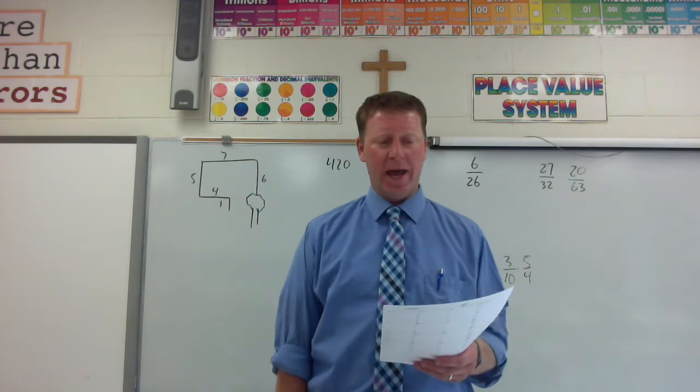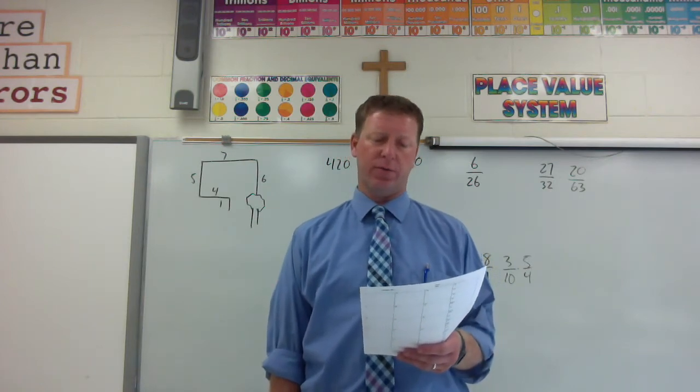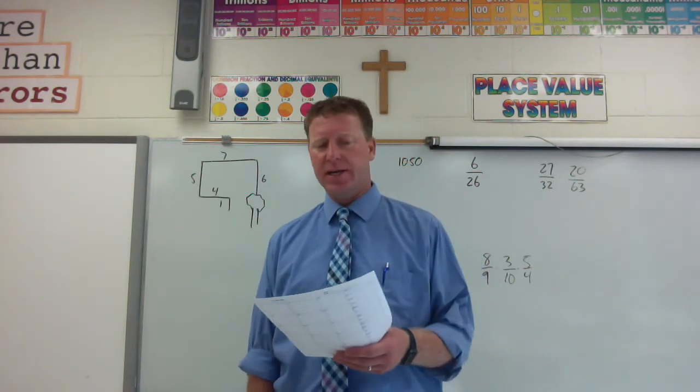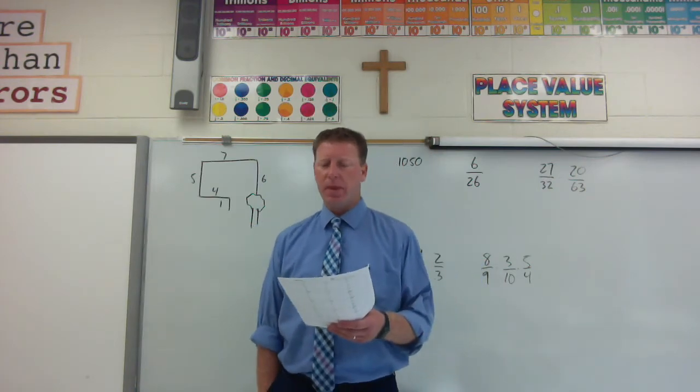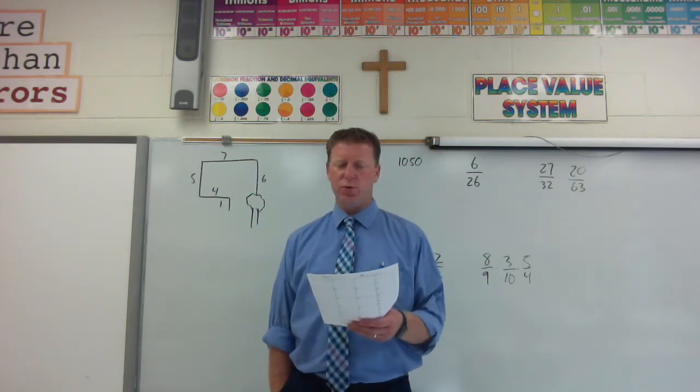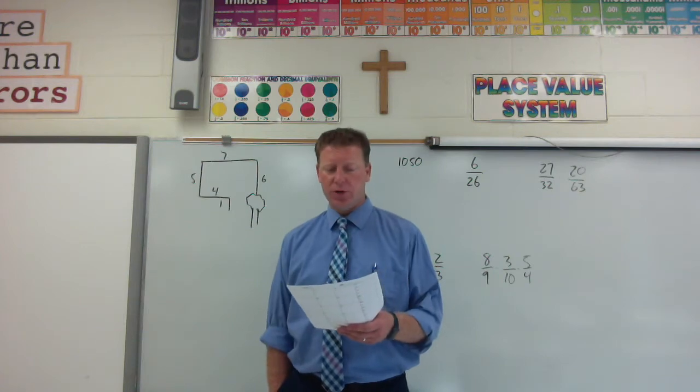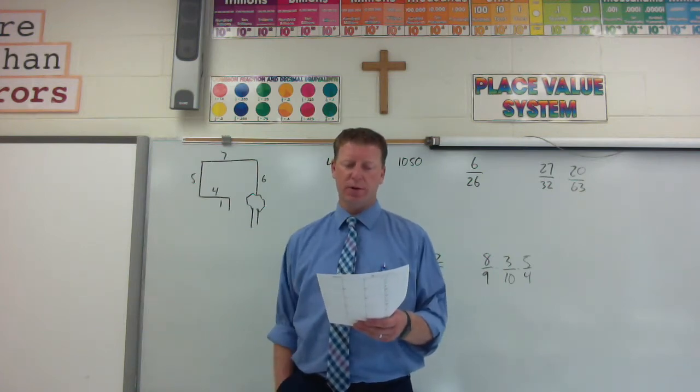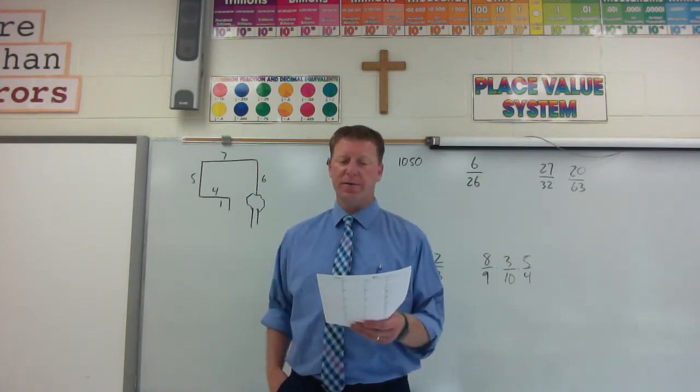Next row: one half, one fifth, one fourth, three fifths, three fourths. Next row: two thirds, nine tenths, one half, three fourths, one fourth. Final row: two fifths, two thirds, three fourths, one third, three fifths.